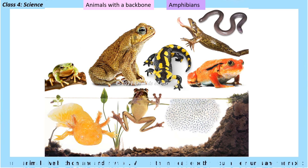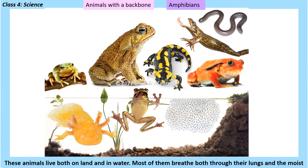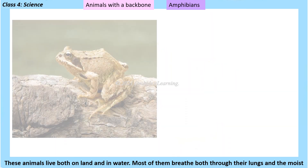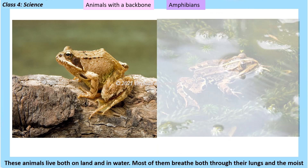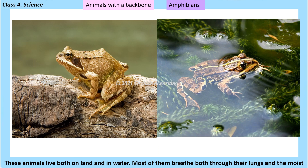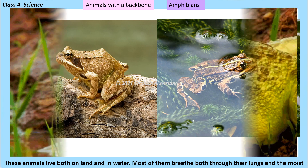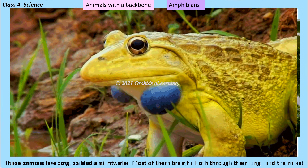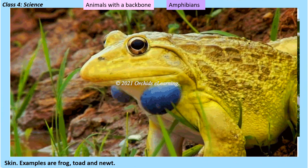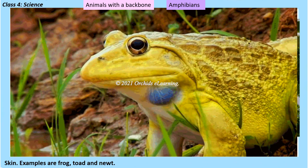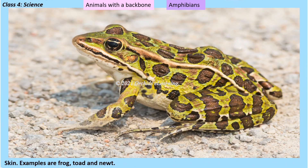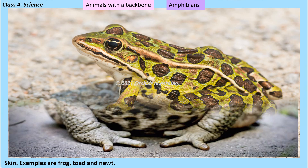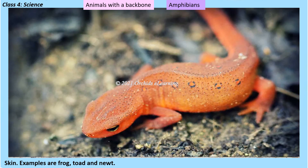Amphibians: these animals live both on land and in water. Most of them breathe both through their lungs and through their moist skin. Examples are frog, toad, and newt.